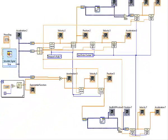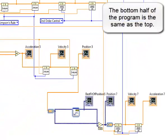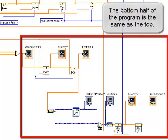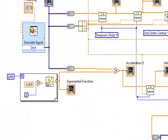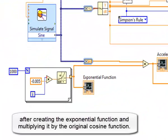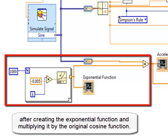The bottom half of the program is the same as the top, after creating the exponential function and multiplying it by the original cosine function.